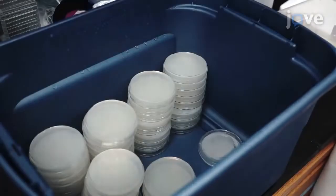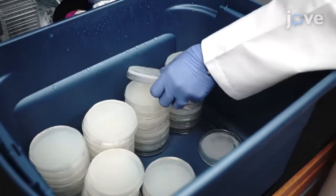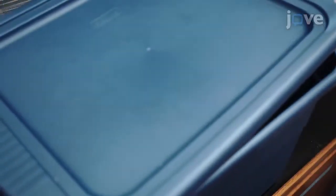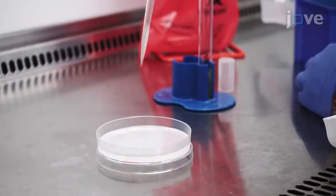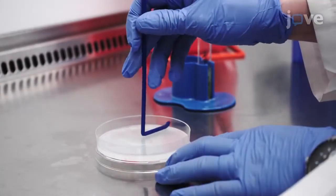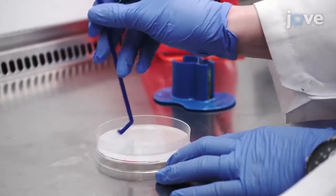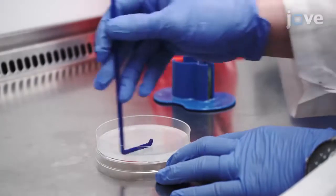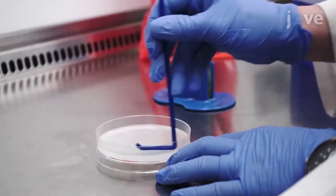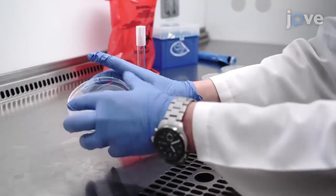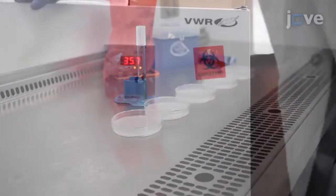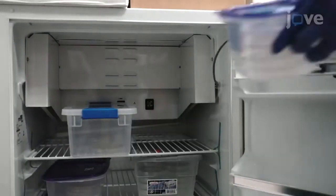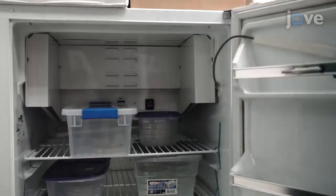After preparing slow kill or SK medium according to the text protocol, seed each 10-centimeter SK plate with 350 microliters of P. aeruginosa from the fresh overnight LB culture. Use a sterile bacterial spreader to evenly spread the bacteria and allow the plates to dry in the biosafety cabinet. Then incubate the plates at 37 degrees Celsius for 24 hours.